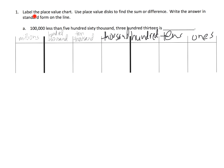So let's get going. Label the place value chart, use place value disks to find the sum or the difference, and write the answer in standard form. It says a hundred thousand less than five hundred sixty thousand three hundred thirteen.